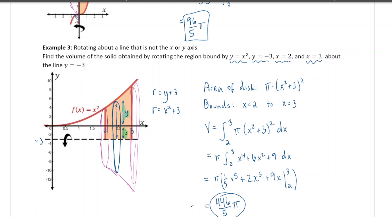That's the end of part one of this lesson. Part two is going to show what happens when you rotate the area between two curves and get a hole in the middle of your shape — the washer method.